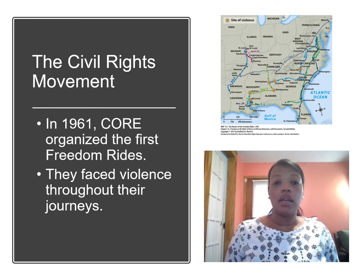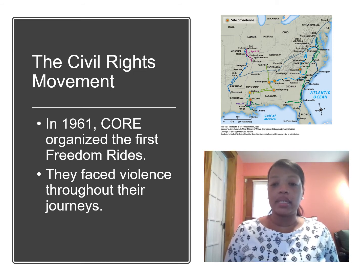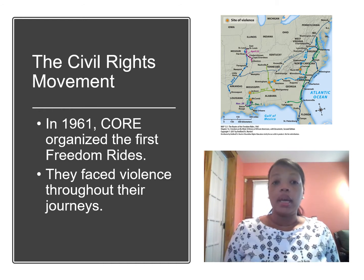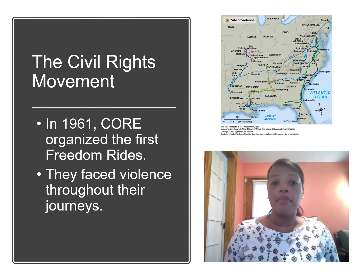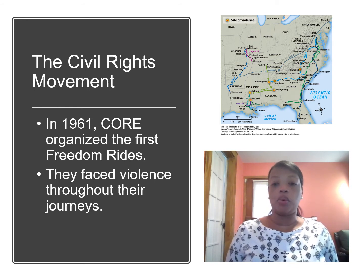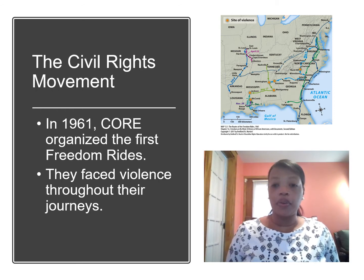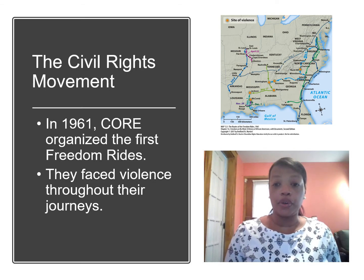In 1961, CORE organized the first freedom rides. You can see on the map the various routes of these different freedom rides. Interracial groups of activists rode together, attempting to integrate interstate buses and bus terminal facilities. They faced violence throughout their journeys. Some of these buses were bombed. When the buses stopped, there would be mobs waiting for them, but they persisted in their efforts.